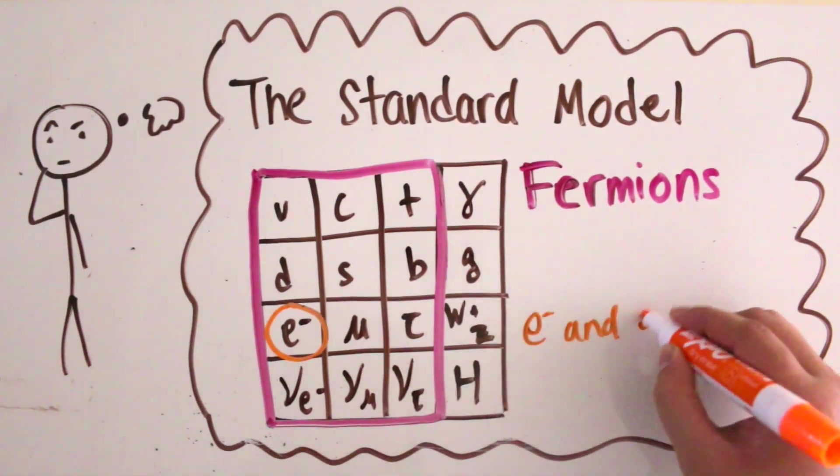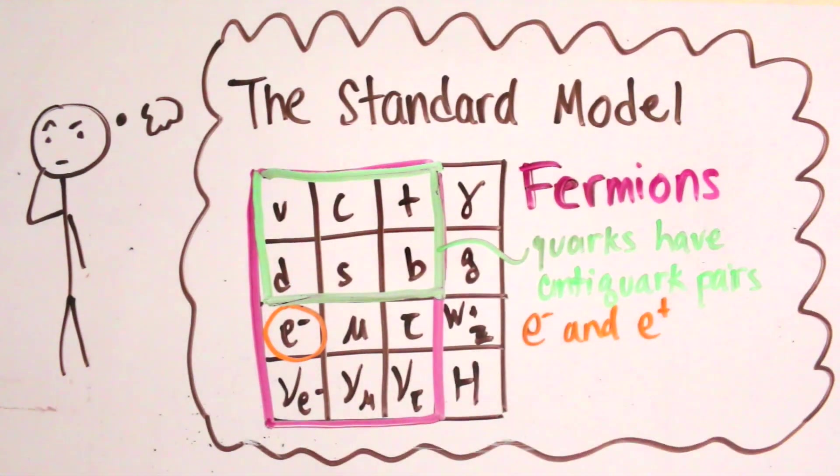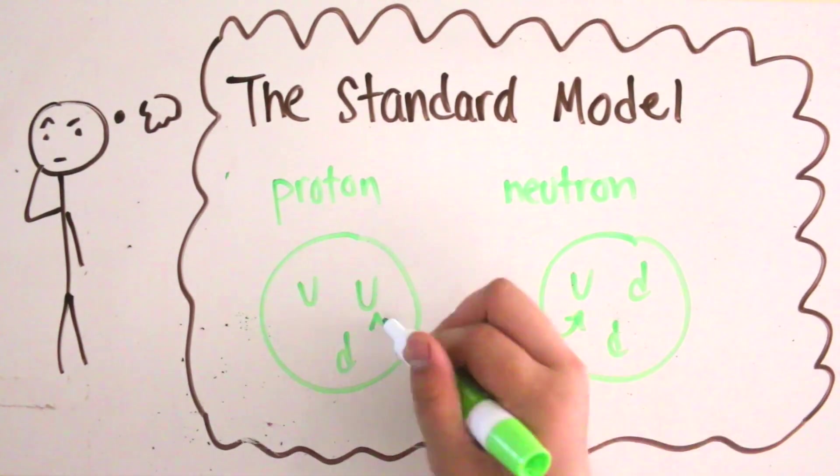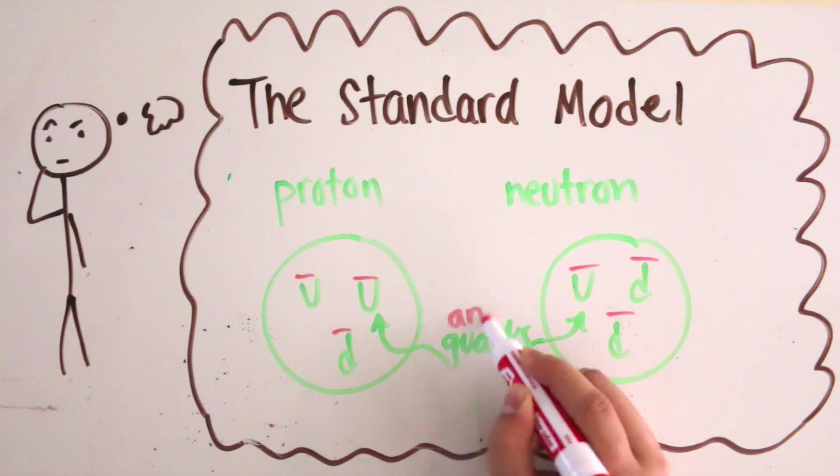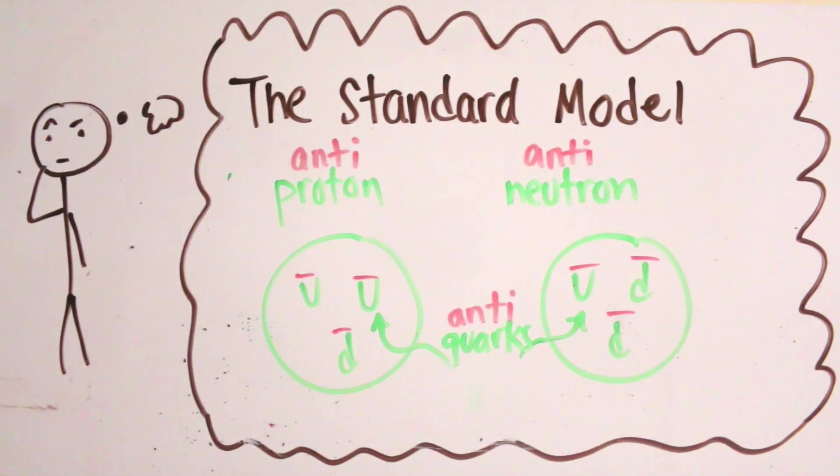The electron's antiparticle is the positron, the quark's antiparticle is the antiquark. Quarks make baryons like neutrons and protons, antiquarks make antibaryons like antiprotons and antineutrons.